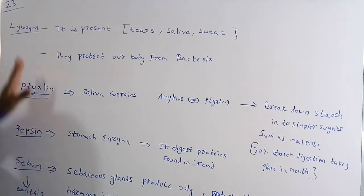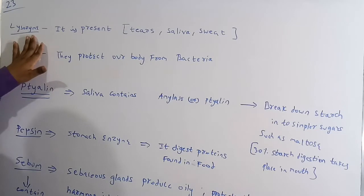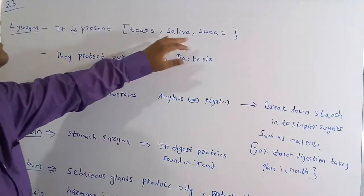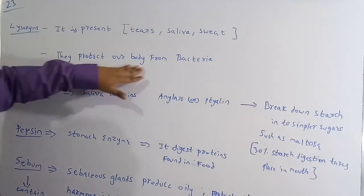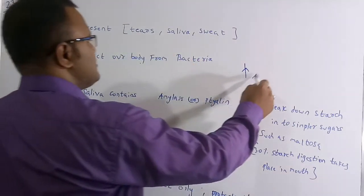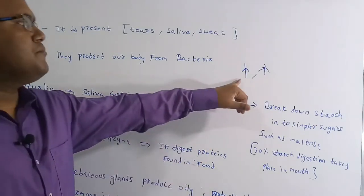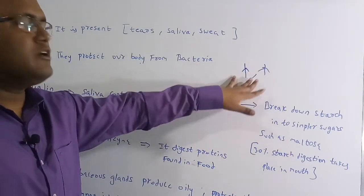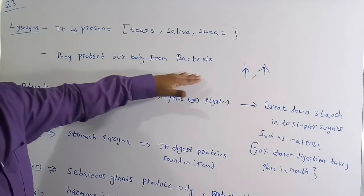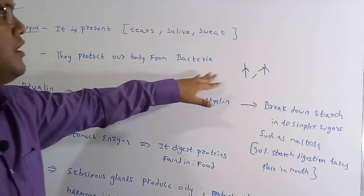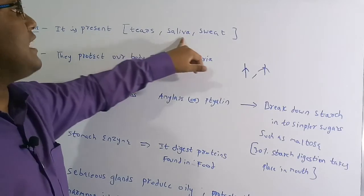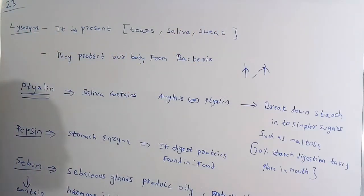Let's discuss each enzyme from the options. Lysozyme is a special enzyme present in tears, saliva and sweat. It protects our body from bacteria. If bacteria tries to enter through the mouth or the eyes, this special enzyme is present in those areas to protect from bacteria. So lysozyme is the enzyme found in tears, saliva and sweat.